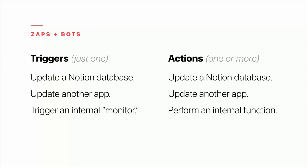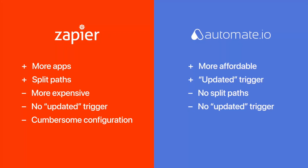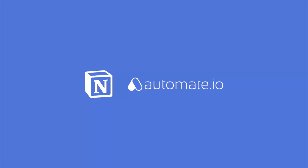Zapier and Automate.io are services where you can create custom integrations with apps that don't yet offer official integrations. In Zapier you create zaps, and in Automate.io you create bots. Each zap and bot has a trigger followed by one or more actions — essentially a formula that says 'if trigger, do actions.' Zaps and bots can be triggered by Notion, by other apps, or by internal monitors configured in Zapier or Automate.io. Actions can reference information provided by the trigger, such as the ID of a page that was updated or a trait of a contact that was added.